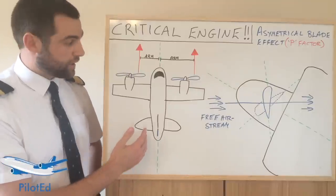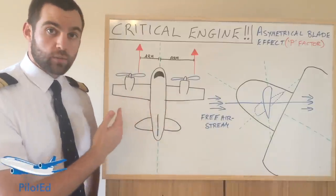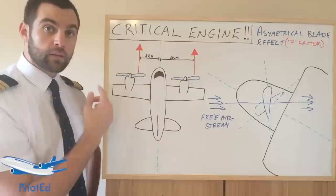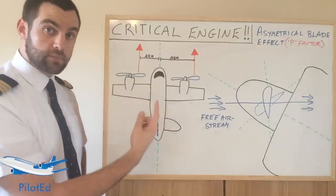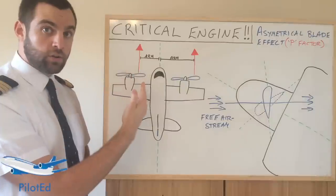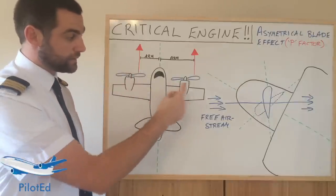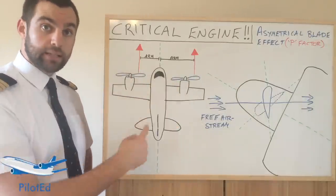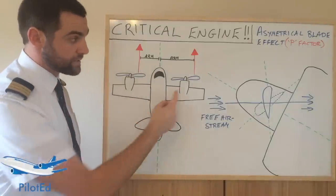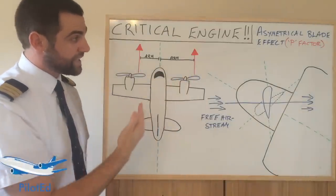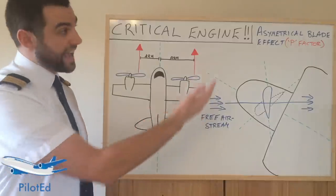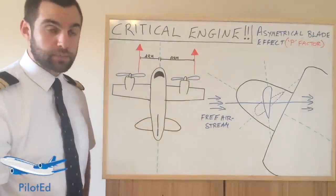In our little sketch here of our aircraft, we have two engines, one mounted on each wing, both with two propellers. These are clockwise rotating engines. The thrust vector is actually larger on the down-going propeller — essentially the right one in these clockwise rotating propellers — as it comes down on the right side and generates more thrust than the up-going propeller on the left. This is because of asymmetric blade effect, which I'll explain shortly.